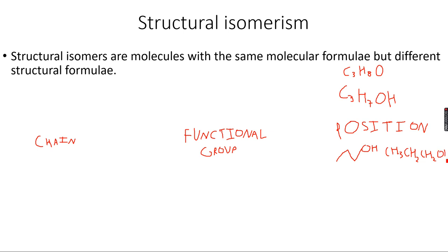CH3CH2CH2OH. I personally like to use skeletal formula, but you can use structural formula if you want. If they don't mention in the question which type of formula they want, then you can draw any. I used to draw skeletal formula, but if they specifically ask for fully displayed, structural, or skeletal, then you will have to give it in that form. So yeah, this is one isomer, or we can have another.